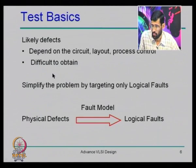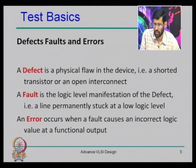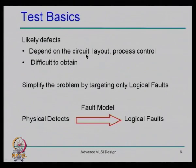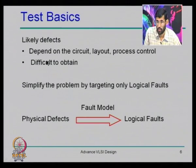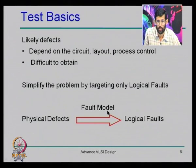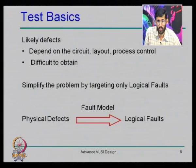There are numerous defects possible and we cannot target all of them. These defects depend on circuit layout and process control, and it is difficult to obtain all possible defects — some may not even be known from newer technology. So we simplify the problem by targeting only logical faults, which are the manifestation of these defects. A physical defect manifests itself as a logical fault, and we model and work around those logical faults.